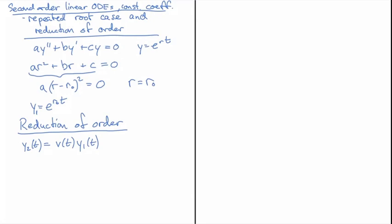So let's do this with an example: y'' + 4y' + 4y = 0 and the characteristic equation here is going to be r² + 4r + 4 = 0.